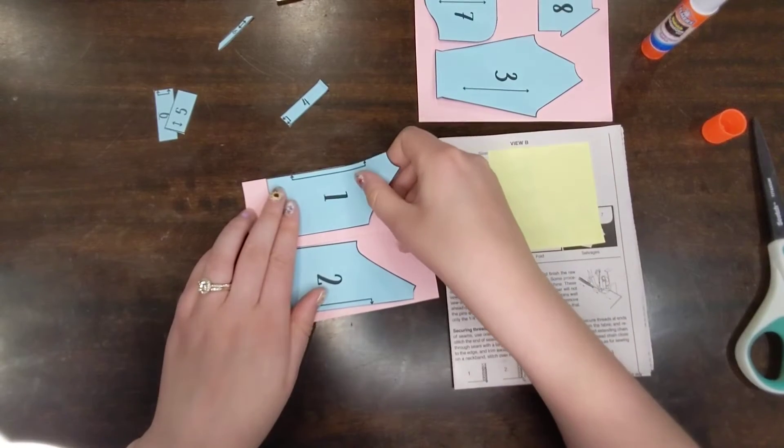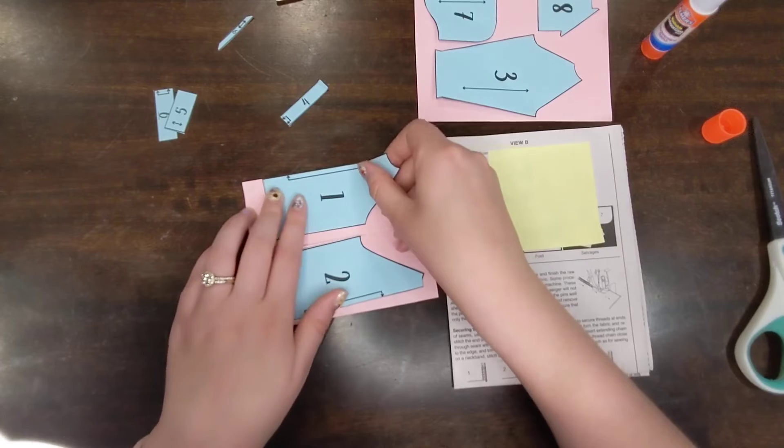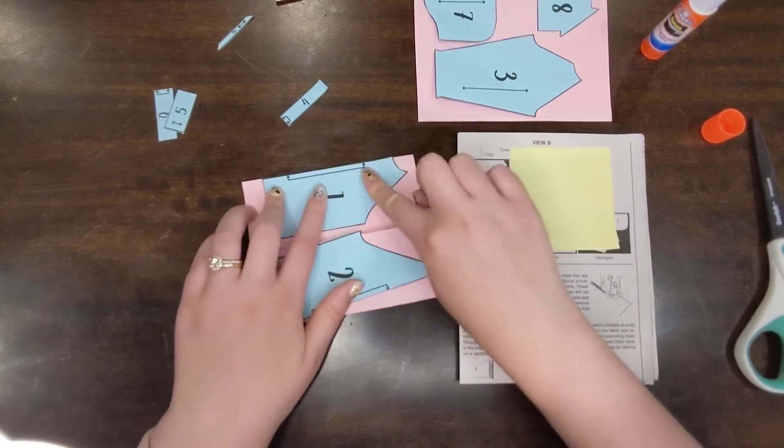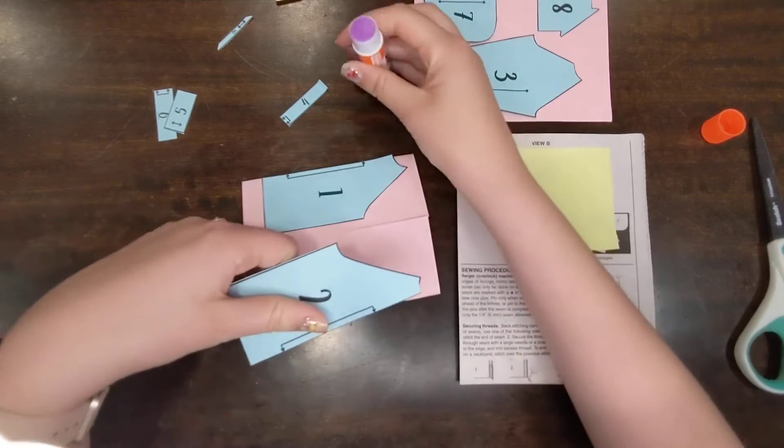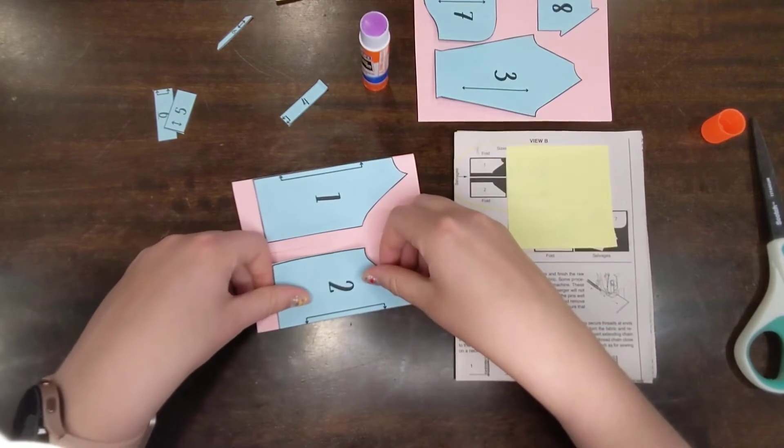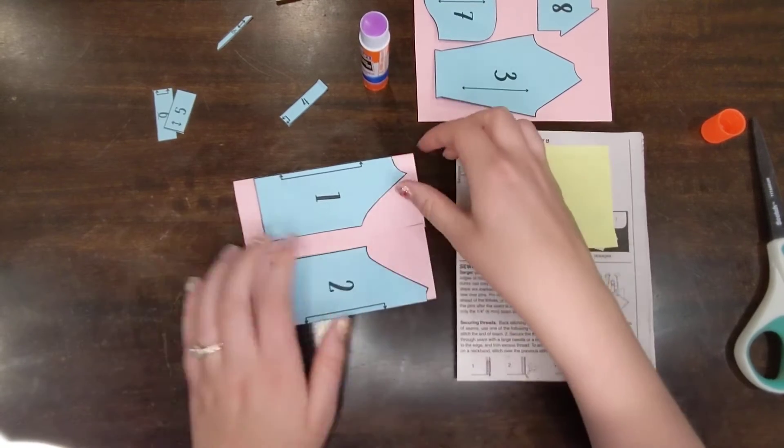If they are a quarter inch off, that is a really big problem. You want them right on that fold. So you'll glue yours much, much better than this. But for the sake of the video, I'm just going to be doing an easy little thing there. And that's my layout.